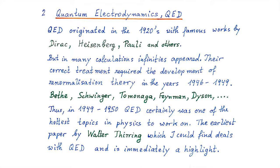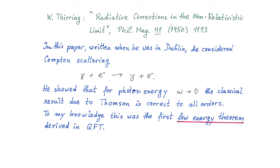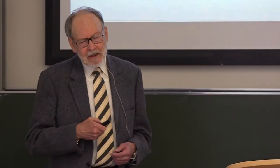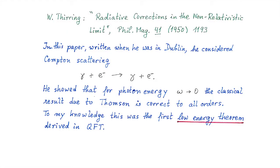The earliest paper by Walter Thirring which I could find indeed deals with quantum electrodynamics, and it is immediately a highlight. He wrote it when he was in Dublin, and it says radiative corrections in the non-relativistic limit. Here is the first page, Dublin Institute of Advanced Studies. He considered, in this paper, Compton scattering: the scattering of a photon on an electron.